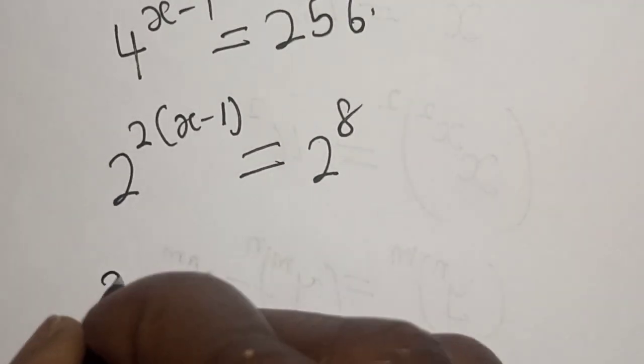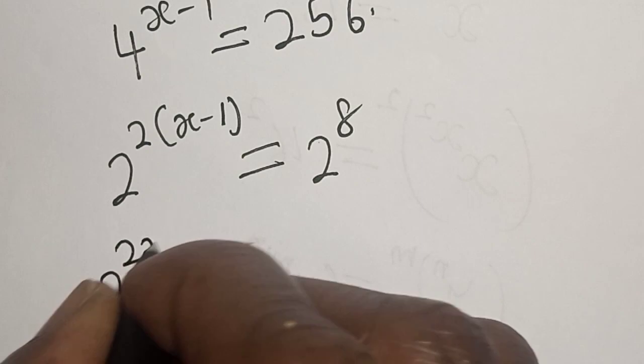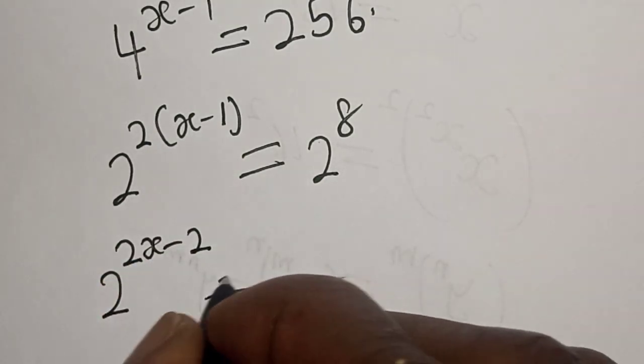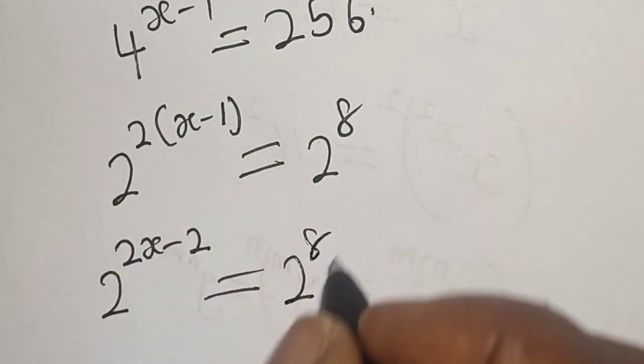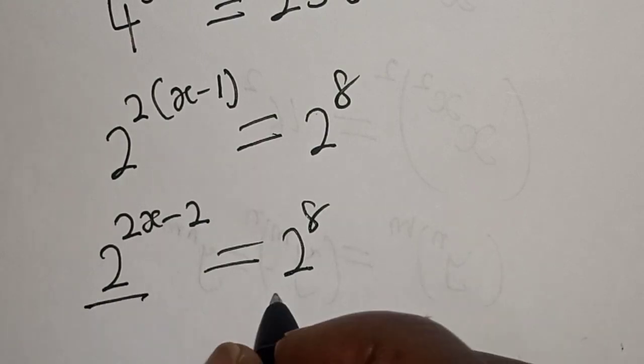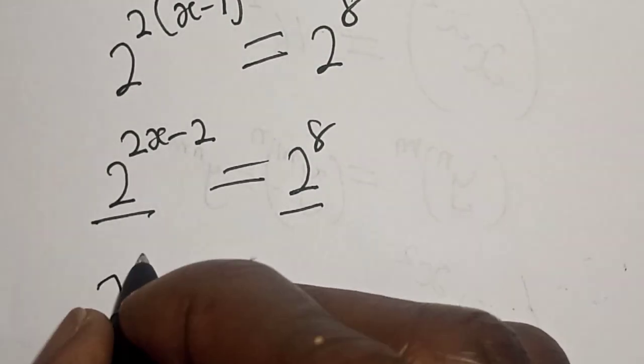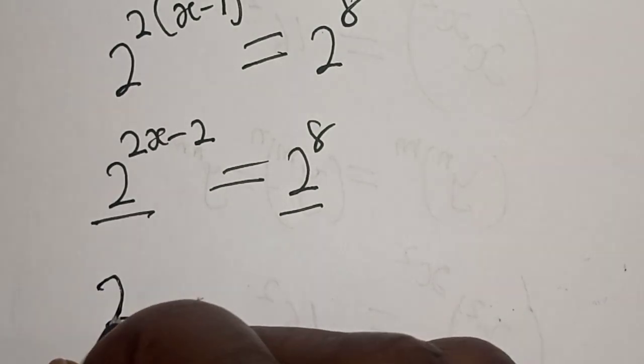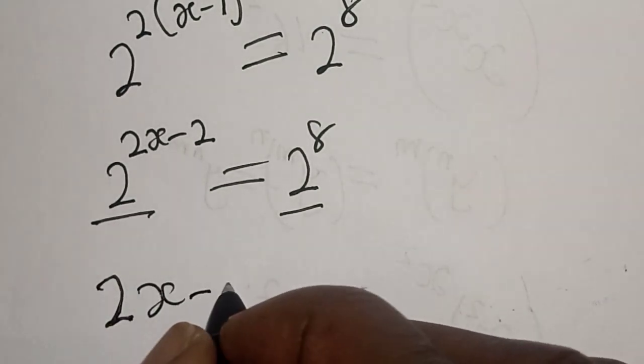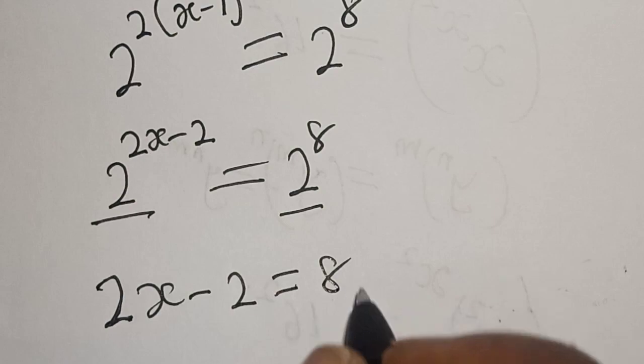I will have 2 raised to power 2x minus 2 is equal to 2 raised to power 8. They have the same base.